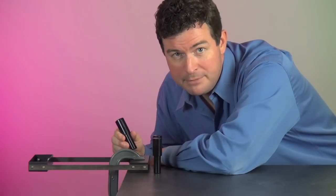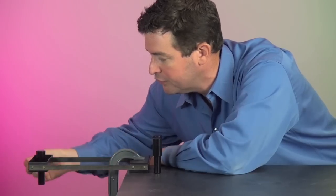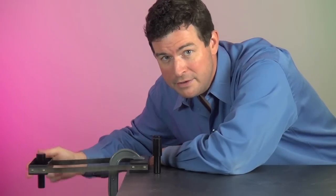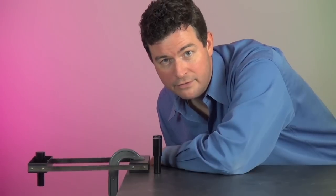The inertial balance is clamped to a lab table and a known mass is placed into one of the pre-drilled holes in the tray. When the balance is set into motion, it will oscillate horizontally depending only on the mass in the tray.